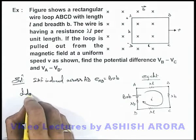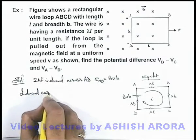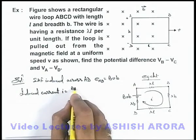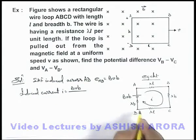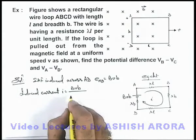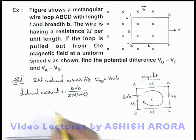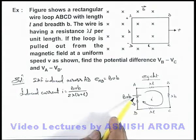The induced current in the circuit i can be written as Bvb divided by the total resistance, which is 2λ(b + l). If we know the current and the EMF induced across AD, we can easily find the required potential differences.